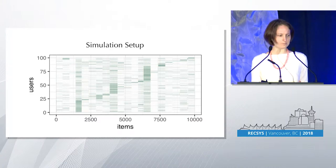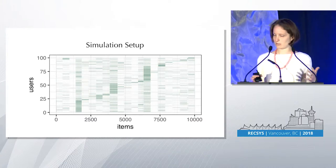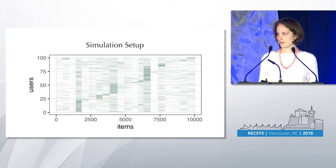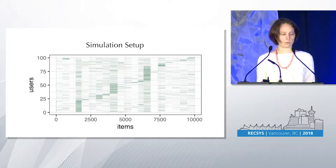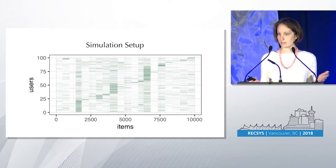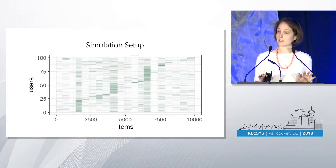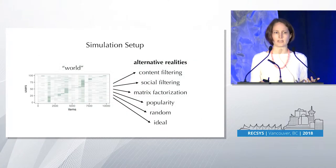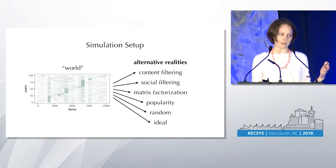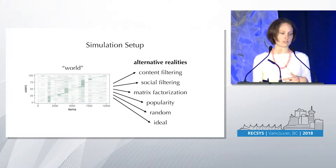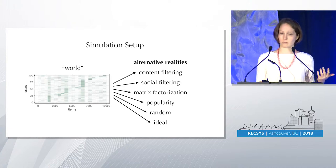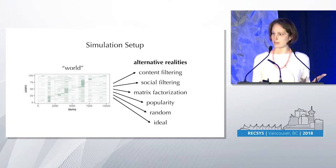We wanted to investigate this feedback loop. We built a simulated system because we can control it — we're also currently working on user studies. We built a simulation where users interact with items in a matrix factorization style preference structure. We created ten different worlds and exposed them to different alternative realities: content filtering recommendations, social filtering, matrix factorization, recommendations based on item popularity, random recommendations, and ideal recommendations based on the true utility of the simulation.